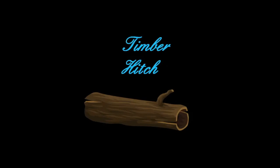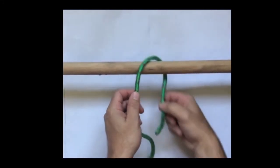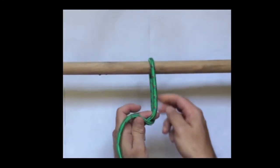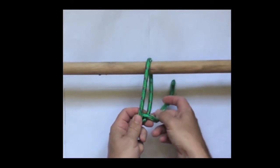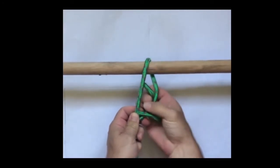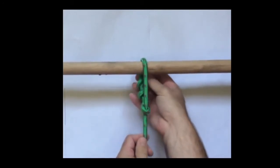The timber hitch, also known as a bowyer's knot. The rope passes over, loops round itself, and then you spiral the tail back up the way it came. And then pull it up.